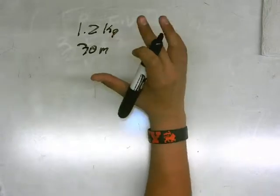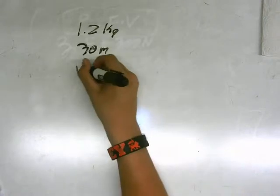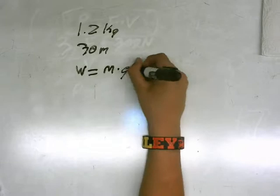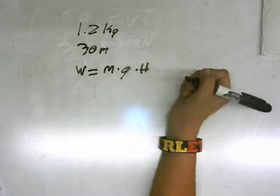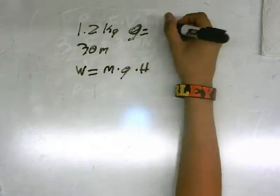Now, our equation for part A is that work equals mass times gravity times height. Pretty easy, seeing how gravity equals 9.8.